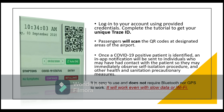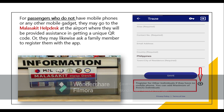Once a COVID-19 positive patient is identified, an in-app notification will be sent to individuals who may have had contact with the patient, so they can immediately observe self-isolation procedures and other health precautions. For passengers who do not have cell phones or any other gadgets, you may go to the Malasakit Help Desk at the airport. They will help you and provide assistance in getting a unique QR code. You may also ask a family member for help to register in the application.